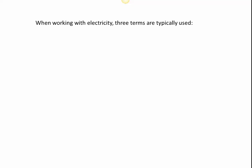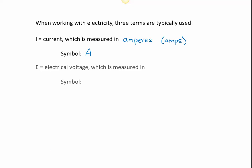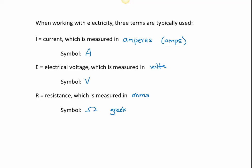When we work with electricity, we have three types of terms. We have the current, which is given to us by a capital I, measured in amperes — we tend to abbreviate these as amps, and the symbol for amps is a capital A. Then we have the electrical voltage, which in our formulas is written as E, measured in volts, abbreviated V. And then we have the resistance, abbreviated R, measured in ohms, whose symbol is the Greek letter omega. So we have a lot of different letters and abbreviations for units floating around.